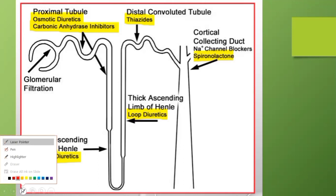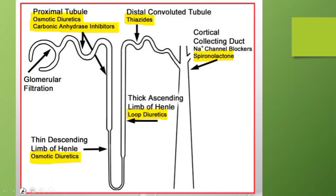If you see this picture, you will understand where each diuretic acts, because these questions are frequently asked. Thiazide diuretics act on the distal convoluted tubule. Loop diuretics act on the thick ascending limb of the loop of Henle. Spironolactone acts on the collecting duct.